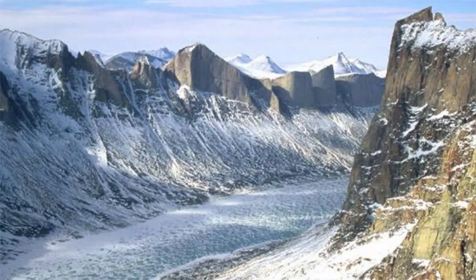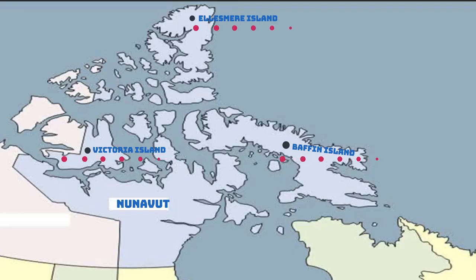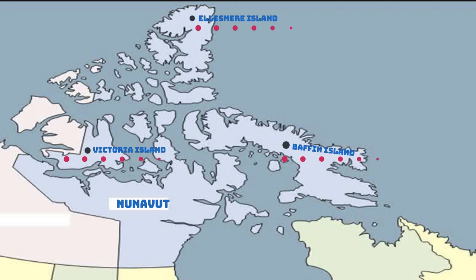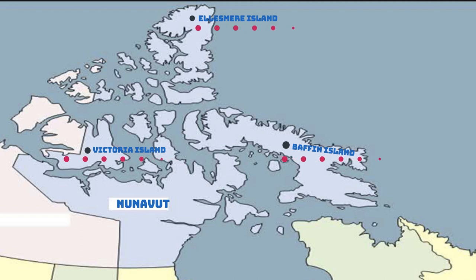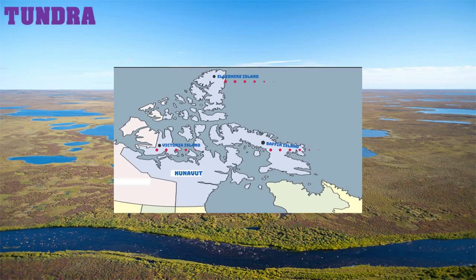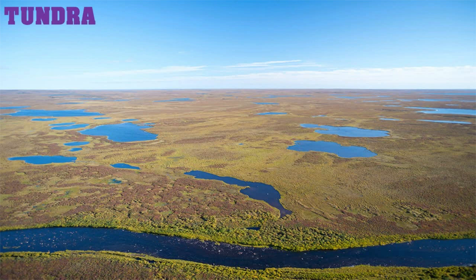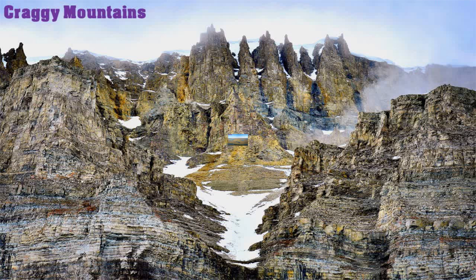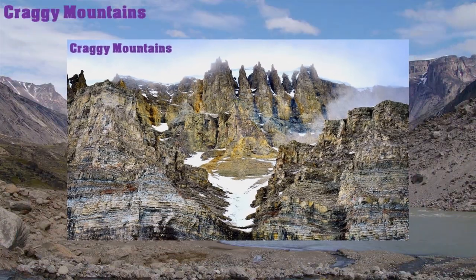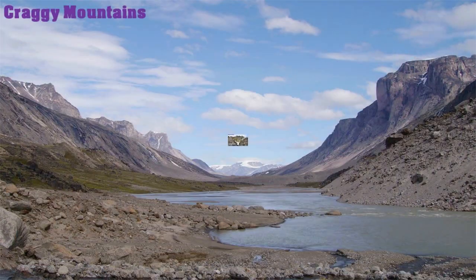Nunavut is a massive, sparsely populated territory forming most of the Canadian Arctic Islands. Ellesmere Island, Baffin Island, and part of Victoria Island are all in Nunavut. Its islands have expanses of tundra, craggy mountains, and remote villages accessible only by plane or boat.